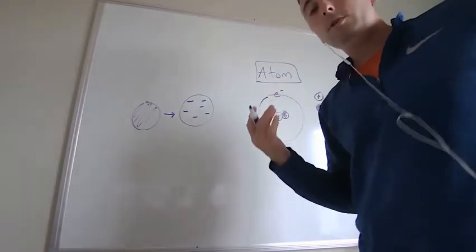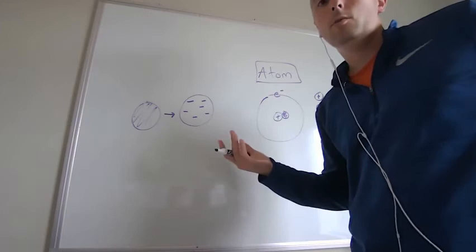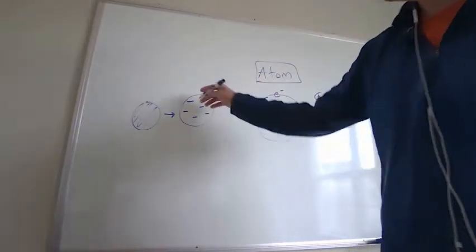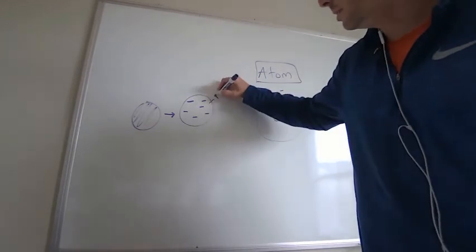How'd they figure that out? Well, that's Thompson's cathode ray. We find out there's negatives in there. Well, how are they hanging out in there? Some sort of positive goo. So we have positive goo sort of holding it in place like a watermelon.